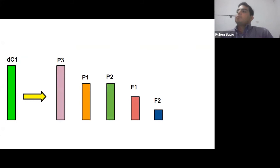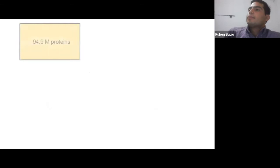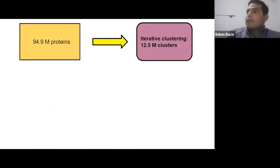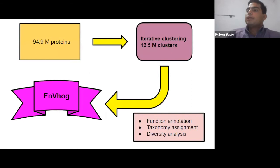A deep cluster is integrated by multiple full-length proteins and multiple fragments. All our cluster models emulate a matryoshka doll-like scale. This is the process we used to cluster 95 million proteins into 12 million clusters. We then used multiple analyses to assign a function and analyze the diversity inside each cluster, and in this way we managed to build the ENVHOG database.